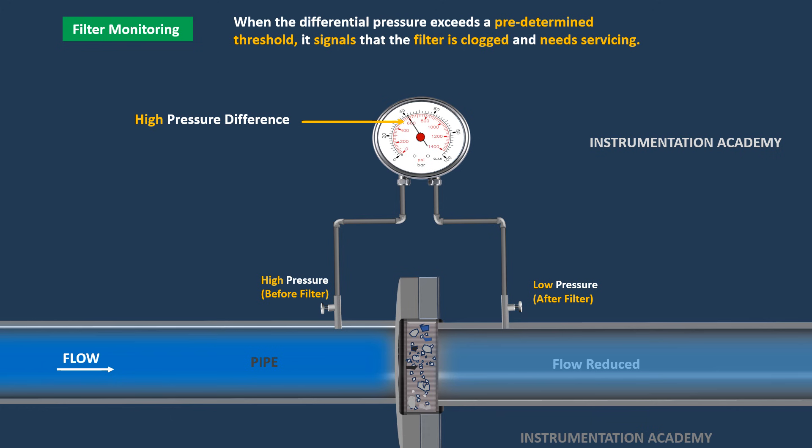The differential pressure gauge provides a clear visual indicator of the filter's condition, helping to avoid unnecessary downtime and maintain the integrity of the system.